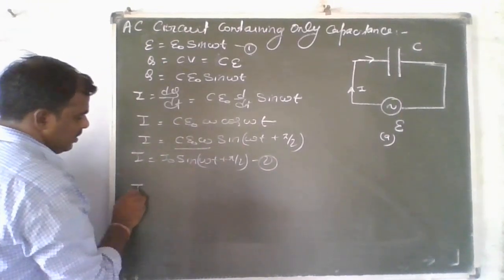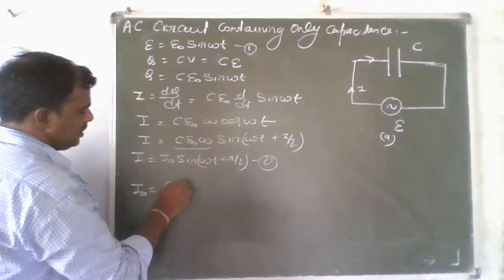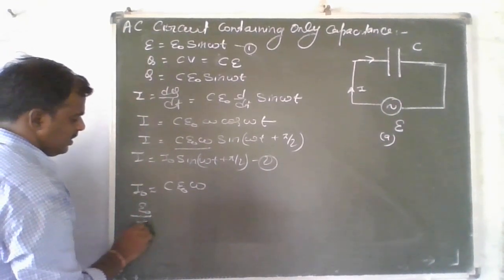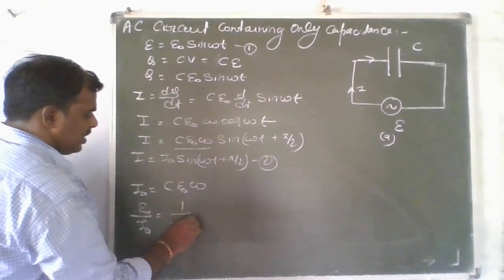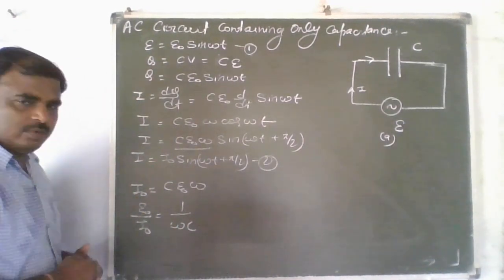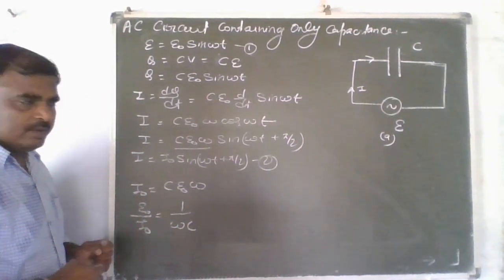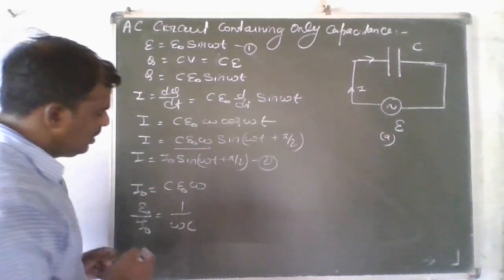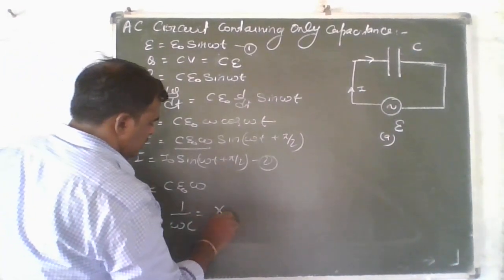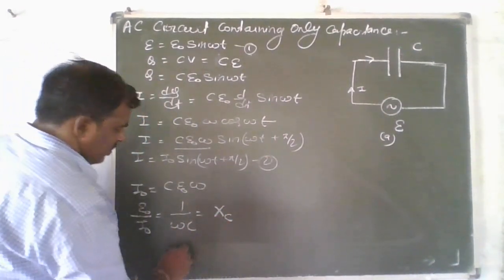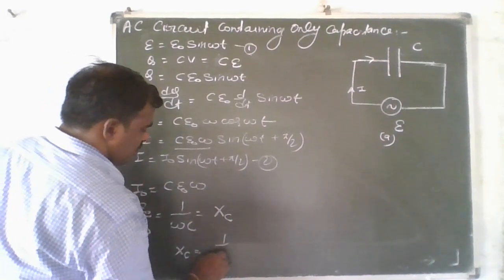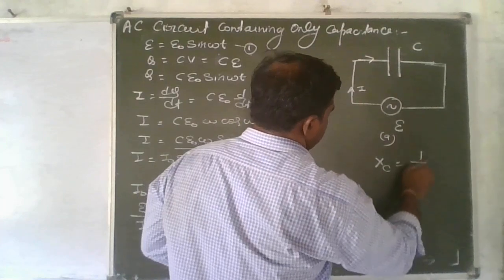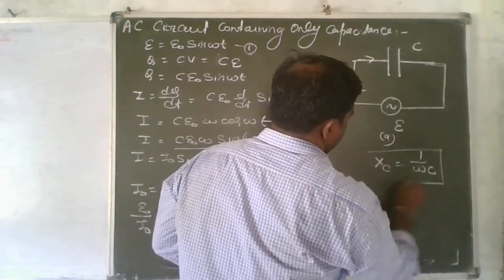Here, I naught equal to C E naught omega. Therefore, E naught upon I naught equal to 1 upon omega C. From Ohm's law, E naught upon I naught is equivalent to resistance. But the opposition produced by the capacitor is known as reactance, represented by XC. So XC equal to 1 upon omega C. This is the reactance of the capacitor.